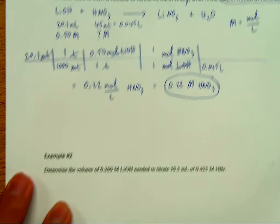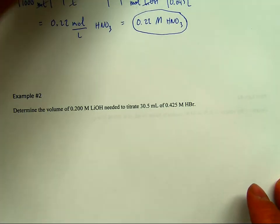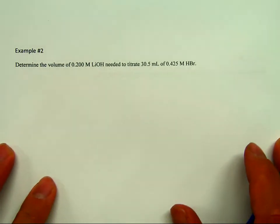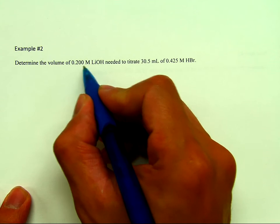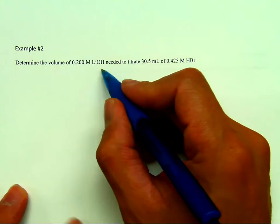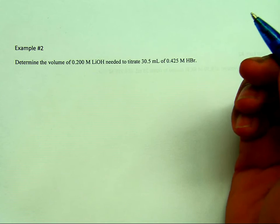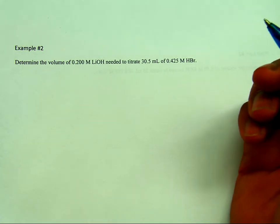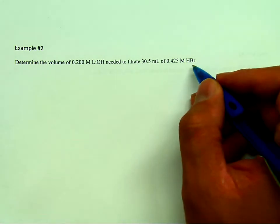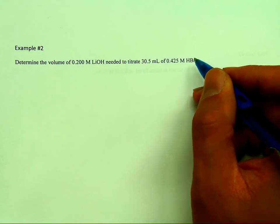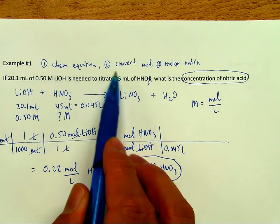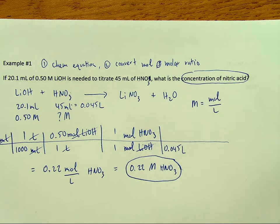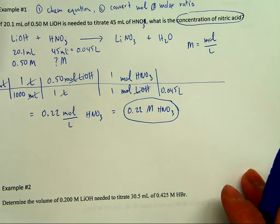Let's move on to example number two: Determine the volume of 0.200 molarity lithium hydroxide needed to titrate 30.5 mL of 0.425 molar hydrobromic acid. We're going to write out the chemical equation, convert to moles, then use the molar ratio to convert the measurement to whatever we want.